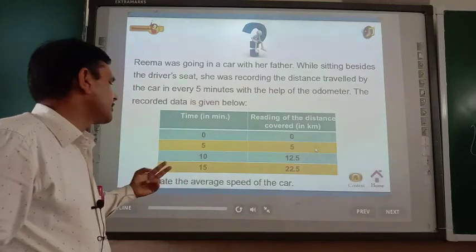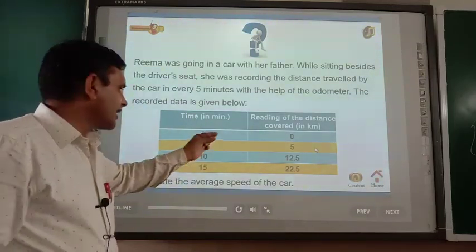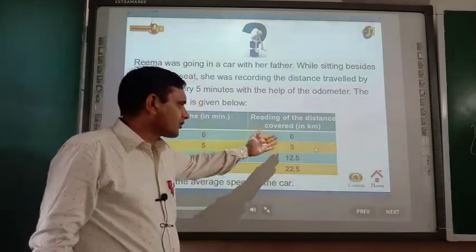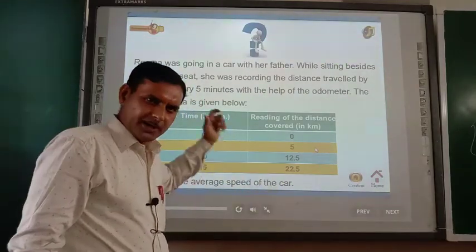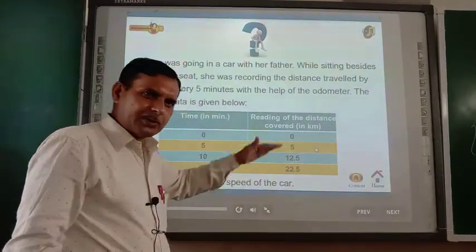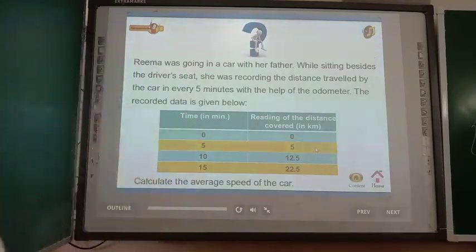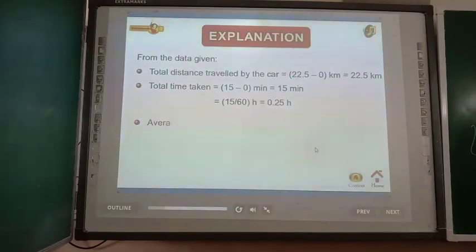It is very simple. The formula for average speed is total distance covered divided by total time taken. Total distance equals 5 plus 12.5 plus 22.5 kilometers. Total time equals 5 plus 10 plus 15 minutes. Divide the total distance by the total time and you will get the average speed.